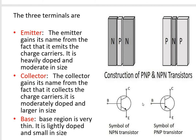This is an NPN transistor and this is its symbolic representation. In the NPN symbol, the arrow mark points outward from the device. In the case of a PNP transistor, the arrow is in the inward direction. That is the difference between the symbolic representations of an NPN transistor and a PNP transistor.